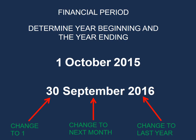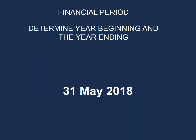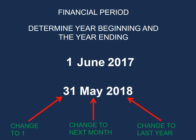By using this technique, you don't have to write everything out in order to determine the year beginning. Our last example is a trial balance extract as at 31 May 2018 — the year end is 31 May 2018. Applying our method: 31 becomes 1; the month of May changes to the next month, June; and for the year, we go back to the previous year, changing 2018 to 2017. So 1 June 2017 will be our year beginning.